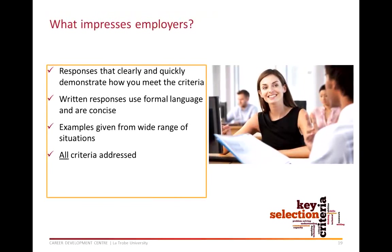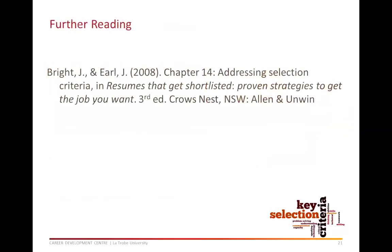To finish up, here is a summary of the main things that impress employers. Reading through hundreds of responses is tedious, so being able to clearly and quickly demonstrate how you meet the criteria will be appreciated and is more likely to influence their perception of you. Use formal language appropriate for a professional workplace. Keep your responses concise, use examples from a wide range of situations, and address all of the criteria. If you genuinely do not have a relevant experience, an alternative would be to write down how you think you would respond if faced with that particular scenario. If you want to know more, the book 'Resumes That Get Shortlisted' has a chapter on addressing selection criteria, available through the library in hardcopy and electronically.